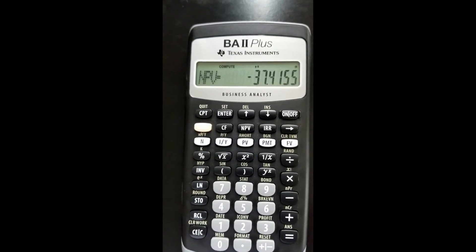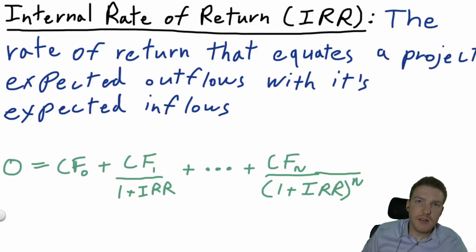Now let's talk about IRR, the internal rate of return. This is the rate of return that equates a project's expected outflows with its expected inflows. Like the previous example where we were buying the rental property, we're trying to find the specific discount rate that would discount our value back to zero.